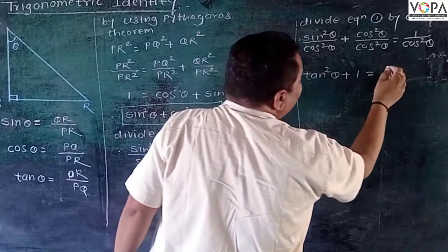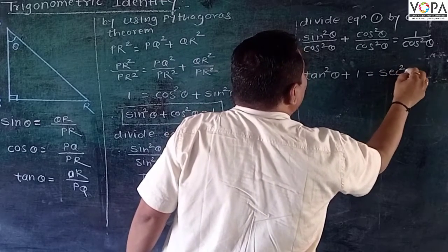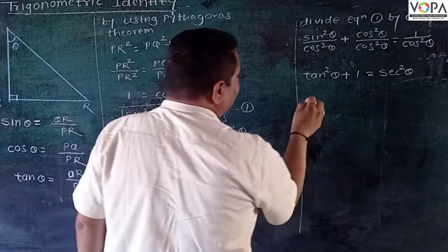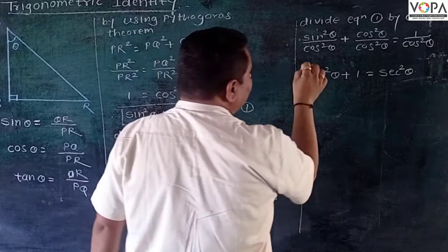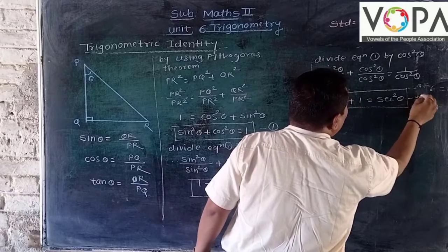1 upon cos square theta, which is secant square theta. So therefore, we have another useful identity, that is equation number 3.